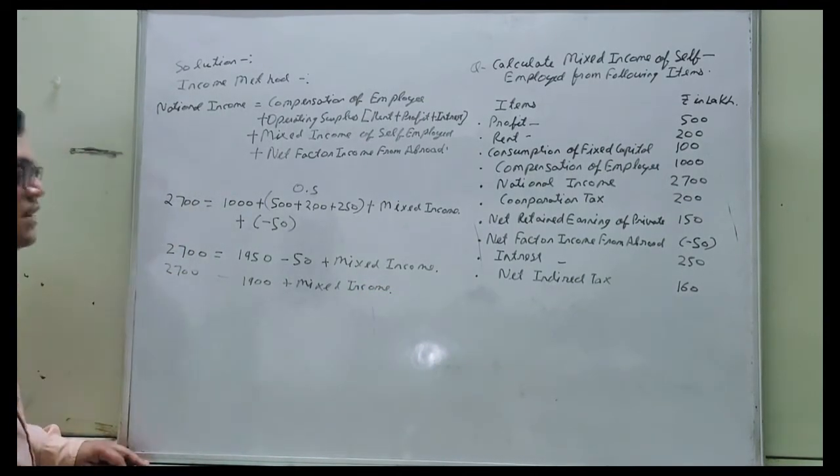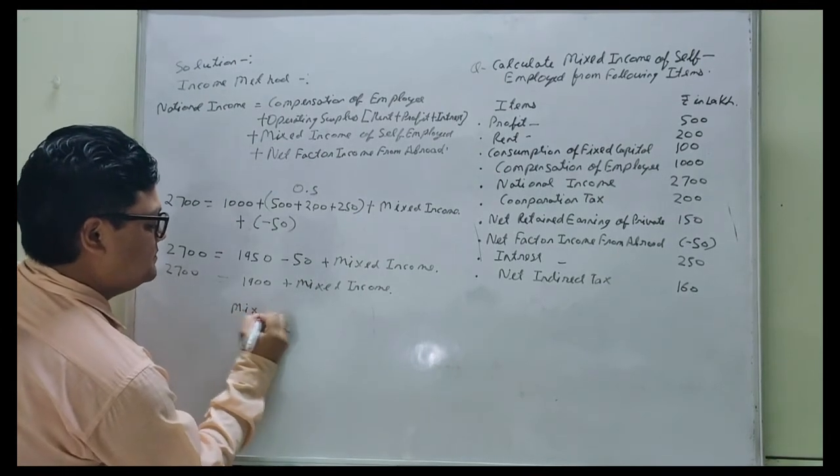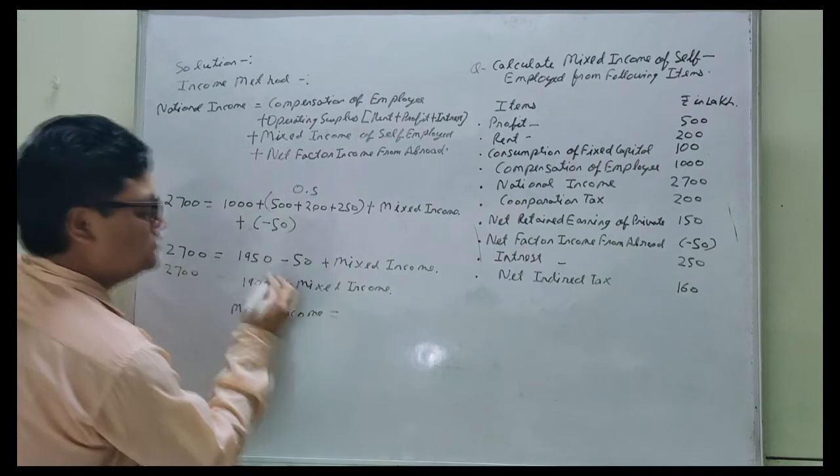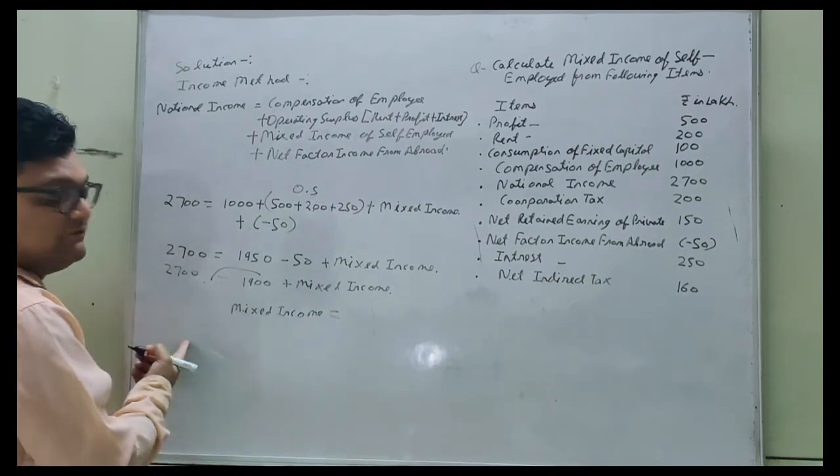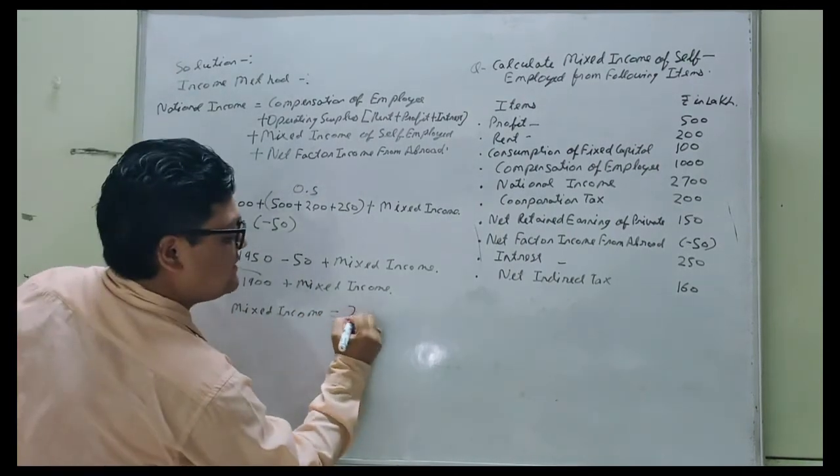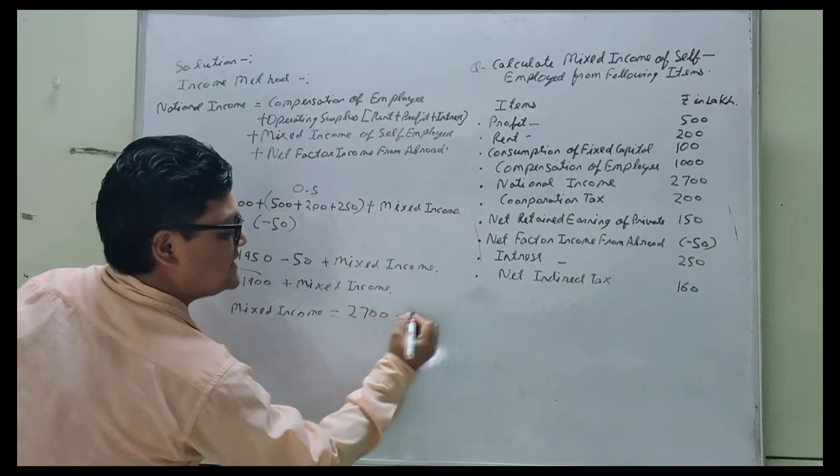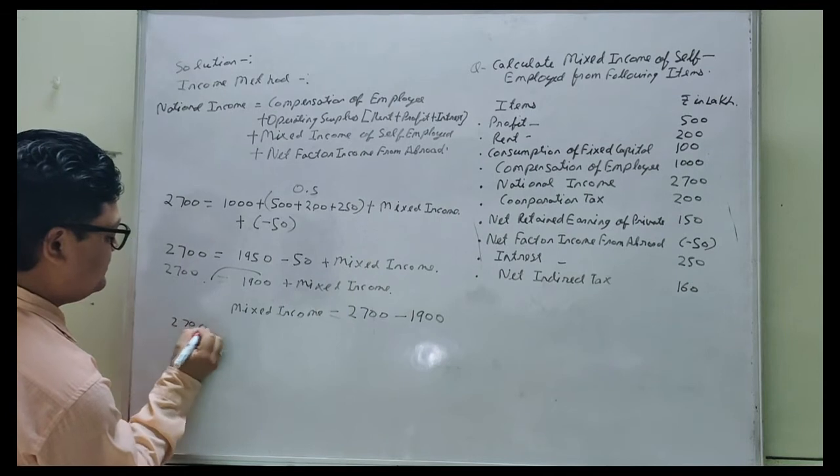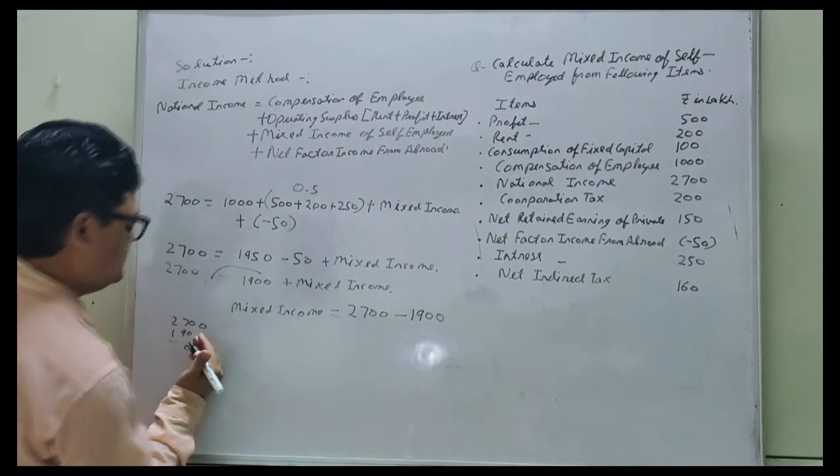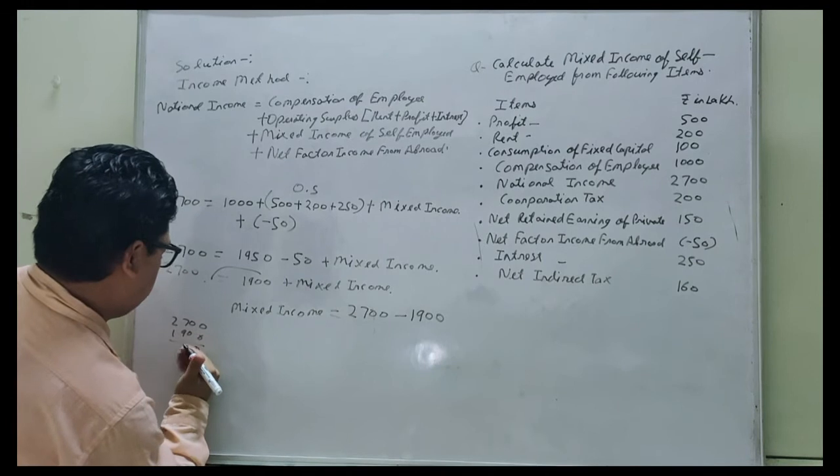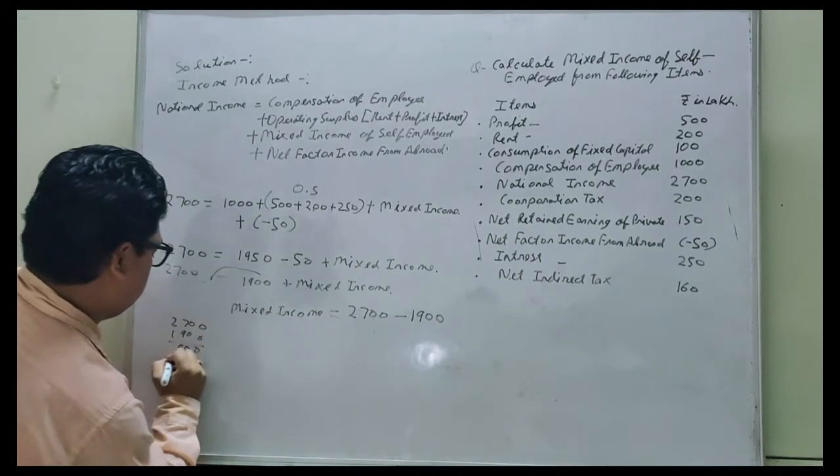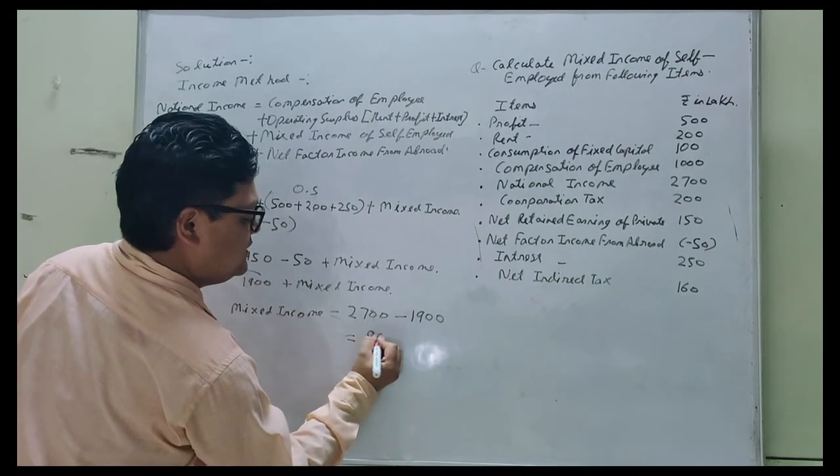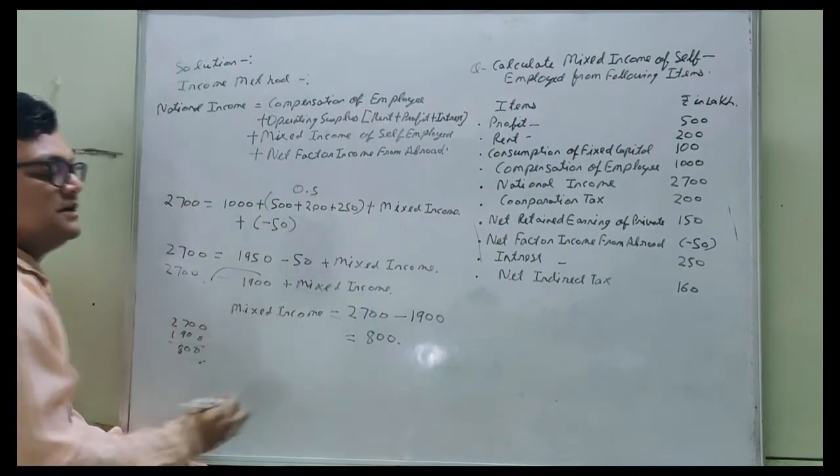Now, mixed income equals - this will come on this side, it will become minus - 2700 minus 1900. 800 will be the mixed income.